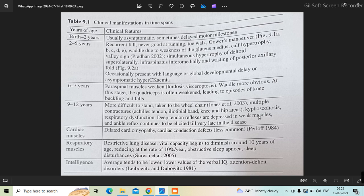Cardiac muscles get involved after 12 years. The child will have dilated cardiomyopathy and cardiac conduction defects. Respiratory muscle involvement causes restrictive lung disease. Vital capacity starts diminishing around 10 years of age.